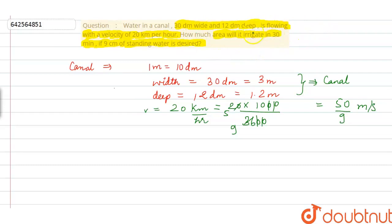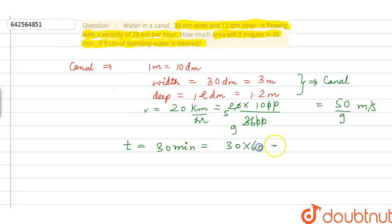Now, how much area is irrigated in 30 minutes? Let us convert this time period to seconds. 30 minutes multiplied by 60 equals 1800 seconds. So the number of seconds is 1800.